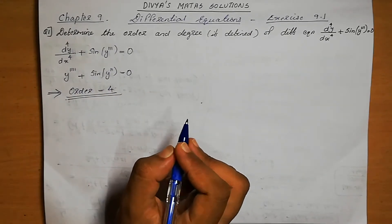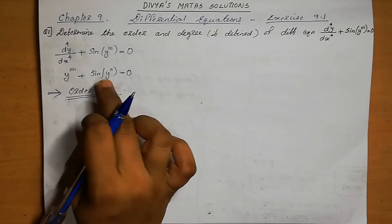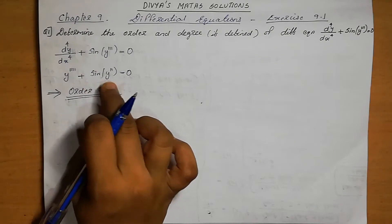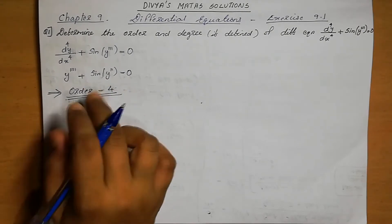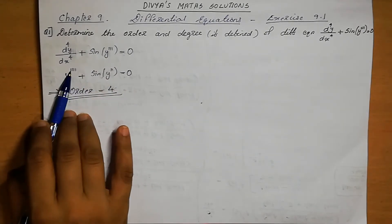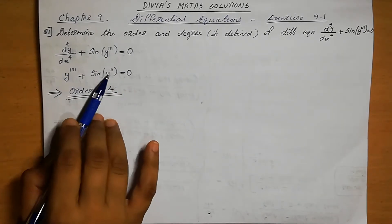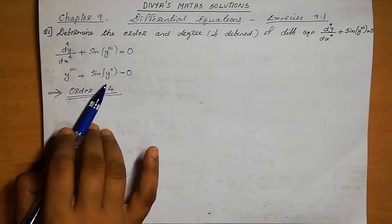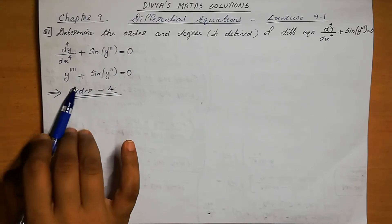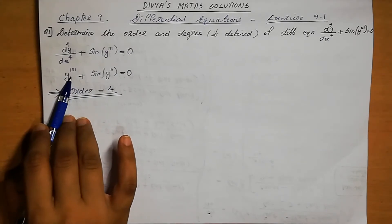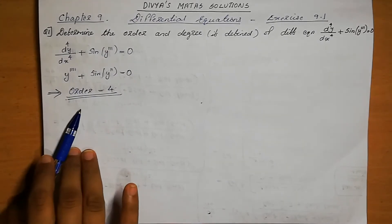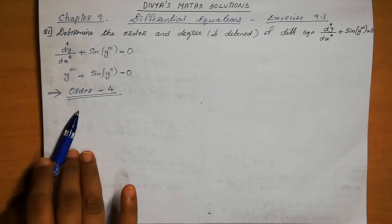To summarize how we select the order: we look for the highest order derivative. This equation has a fourth derivative and a second derivative. The highest order is 4, so we select the order as 4.